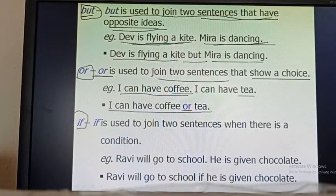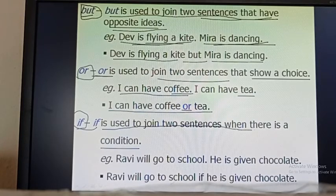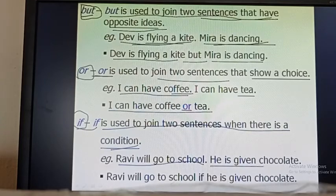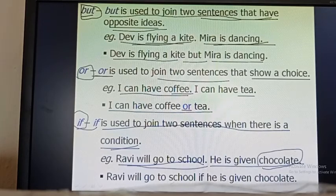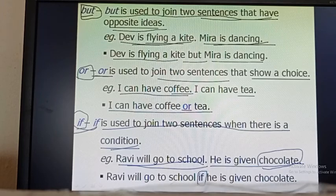If. 'If' is used to join two sentences when there is a condition. For example: Ravi will go to school. He is given chocolate. The condition is that he is given chocolate — then Ravi will go to school. If he is not given chocolate, he will not go to school. So we join these two sentences with 'if': Ravi will go to school if he is given chocolate.